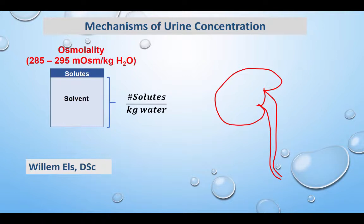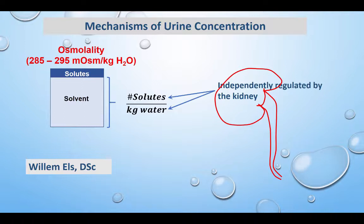Osmolality is simply the ratio of solutes to water in blood plasma, and the kidney has independent mechanisms to regulate water and sodium excretion. Since electrolyte levels are kept very stable, osmolality is largely maintained by mechanisms that regulate body water content, and herein lies a potential problem for land animals.